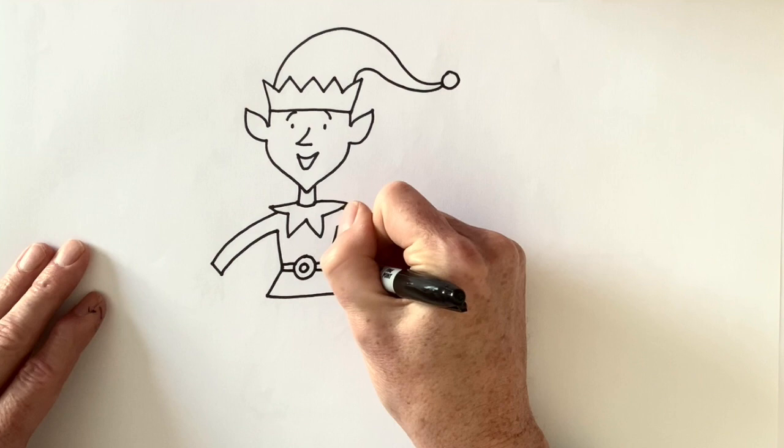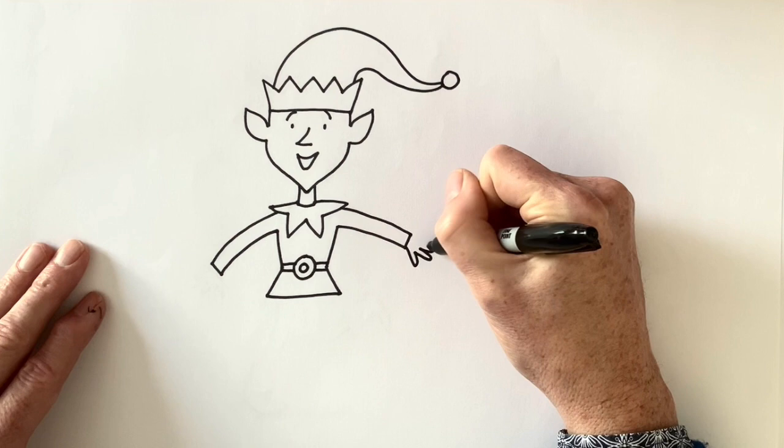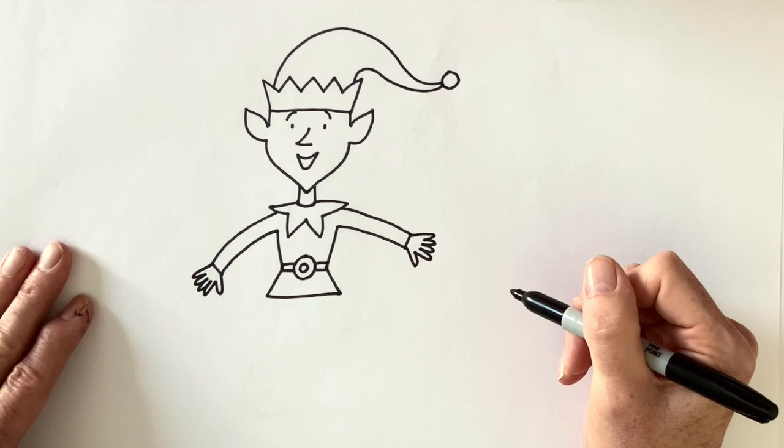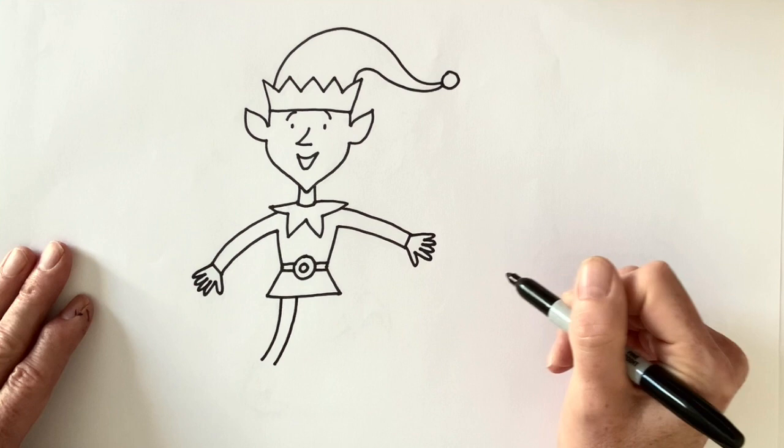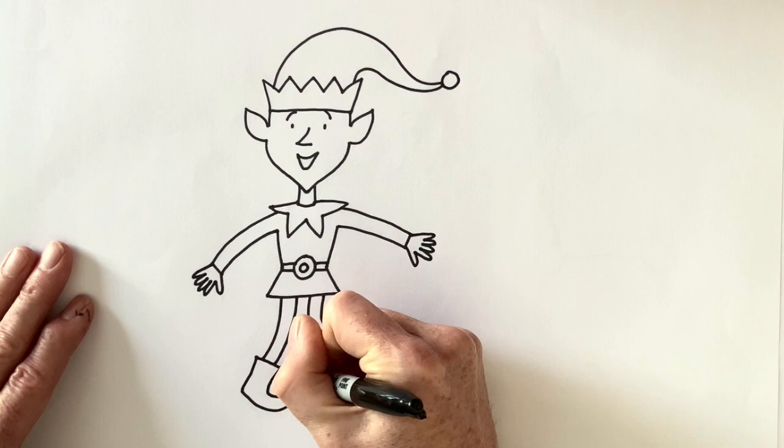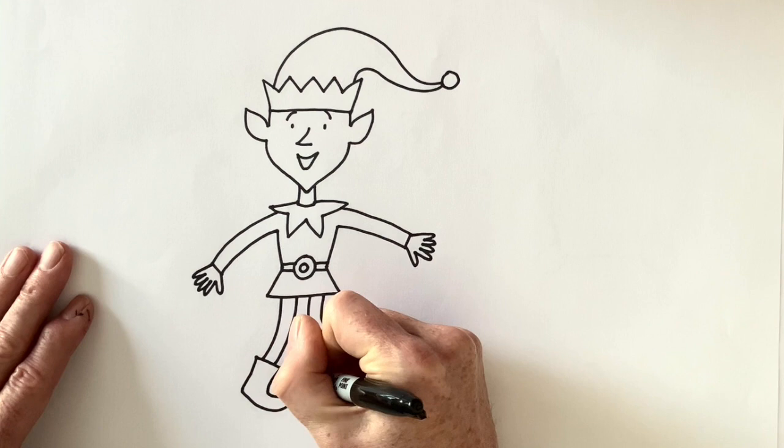Give him some hands. A thumb and four fingers in that hand and a thumb and four fingers in that hand. And one leg going that way. You can draw the legs any way you like but I'm going to draw my elf sort of hopping around. So I've drawn two legs like that and then I'm just going to add boots on the end of either foot.